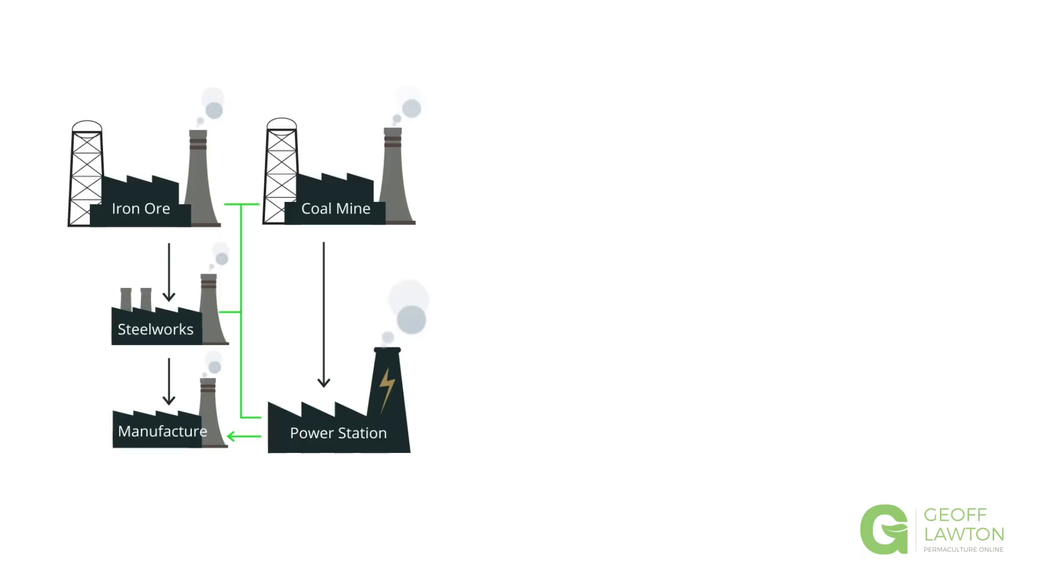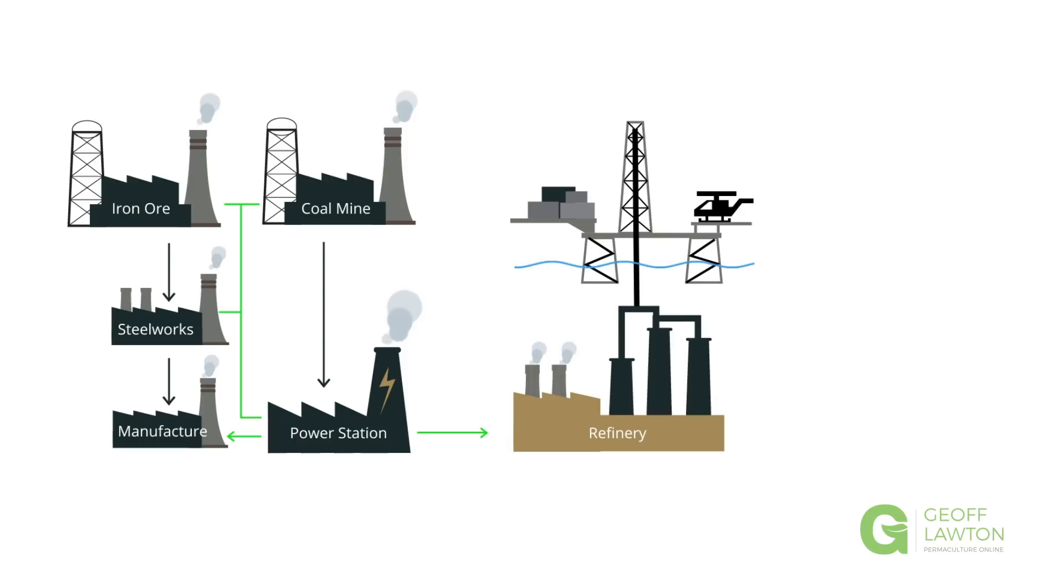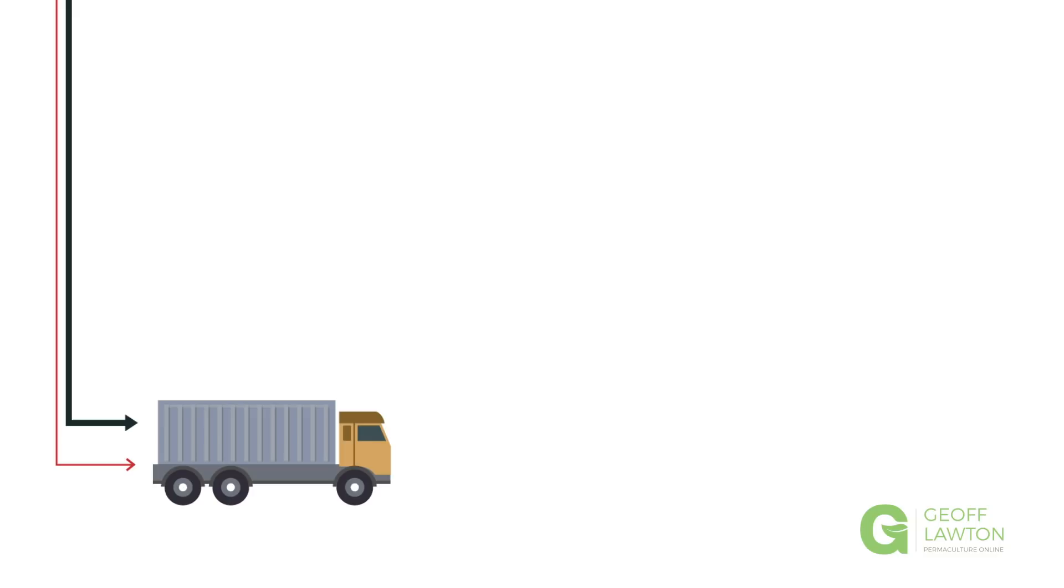But then we also need an oil drilling rig to get oil and an oil refinery so that we can make fuel because we need to truck these eggs around from their mass-produced center. And that needs a power station as well.